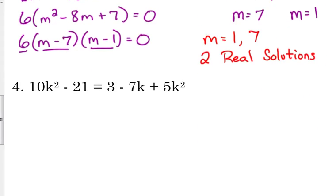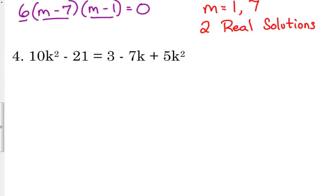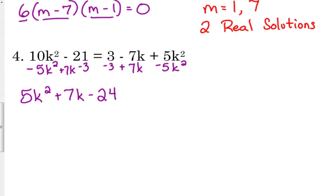Number 4 here has a lot of moving that we need to do. I always look at my quadratic terms first. My k squares. I want to locate where they're at. In this case, I've got them on both sides. So, I move it to the side where it's bigger. Because, that will keep it positive. So, it's bigger on the left side. So, that means I'm going to subtract the 5k squared. I don't have a set of k on the left side. So, I'm just going to have to stick it in there. And then, I do have a constant on the other side. So, I'll subtract that 3 from the constant. So, we get 5k squared plus 7k minus 24 is equal to 0.